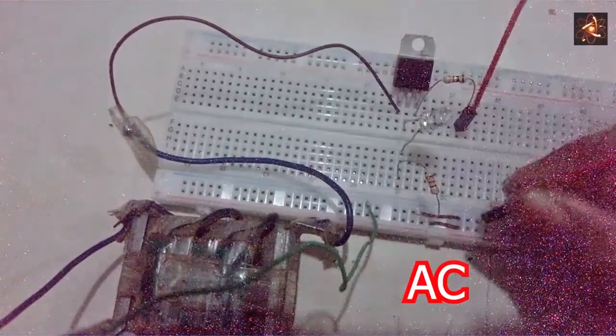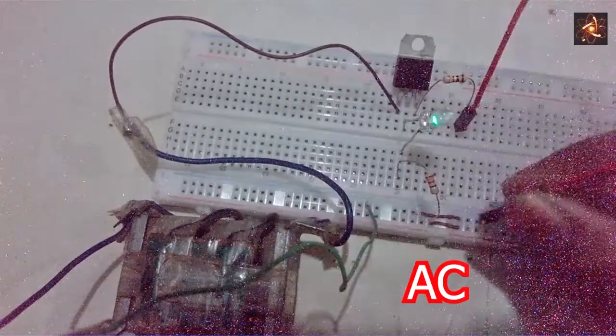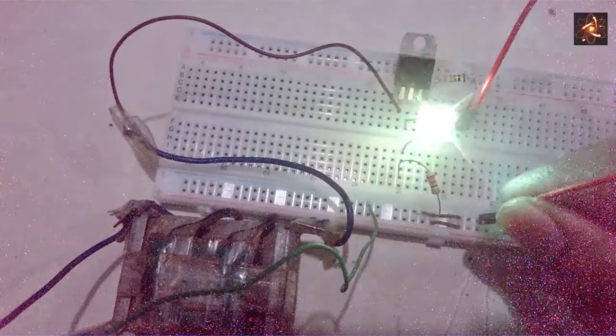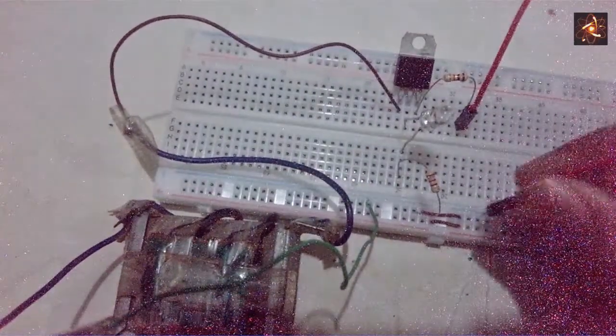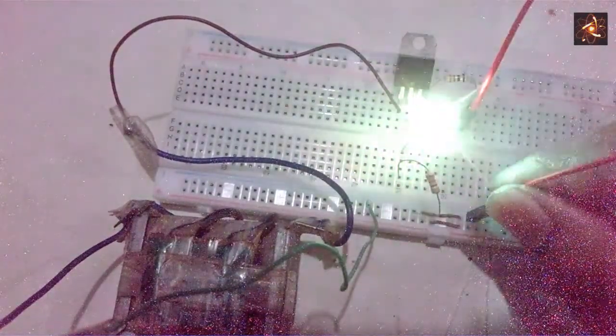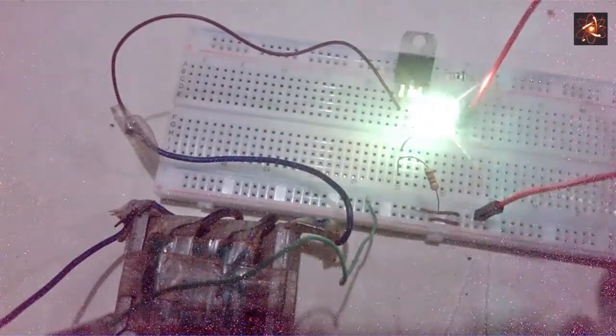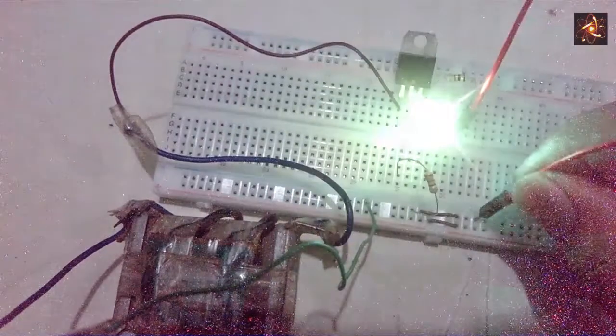When gate pin gets AC current, it turns on the LED. On the other hand, when it's open, the LED stays off. During AC voltage at gate, the LED stays on, otherwise it stays off.